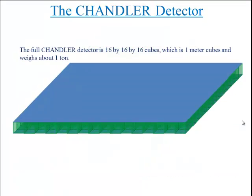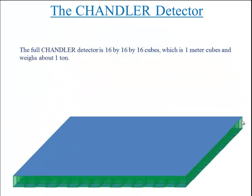The full Chandler detector is 16 by 16 by 16 cubes, which is 1 meter cubed and weighs about 1 ton.